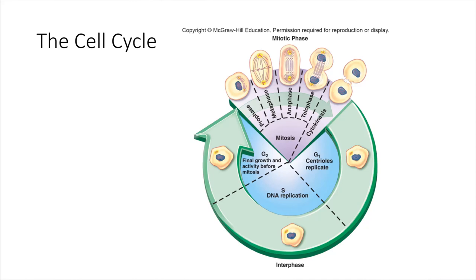The cell cycle represents the series of events that most cells go through during their lifetime. If we look at this schematic, it essentially starts right here, and the very first thing that a new cell will do is enter into G1.